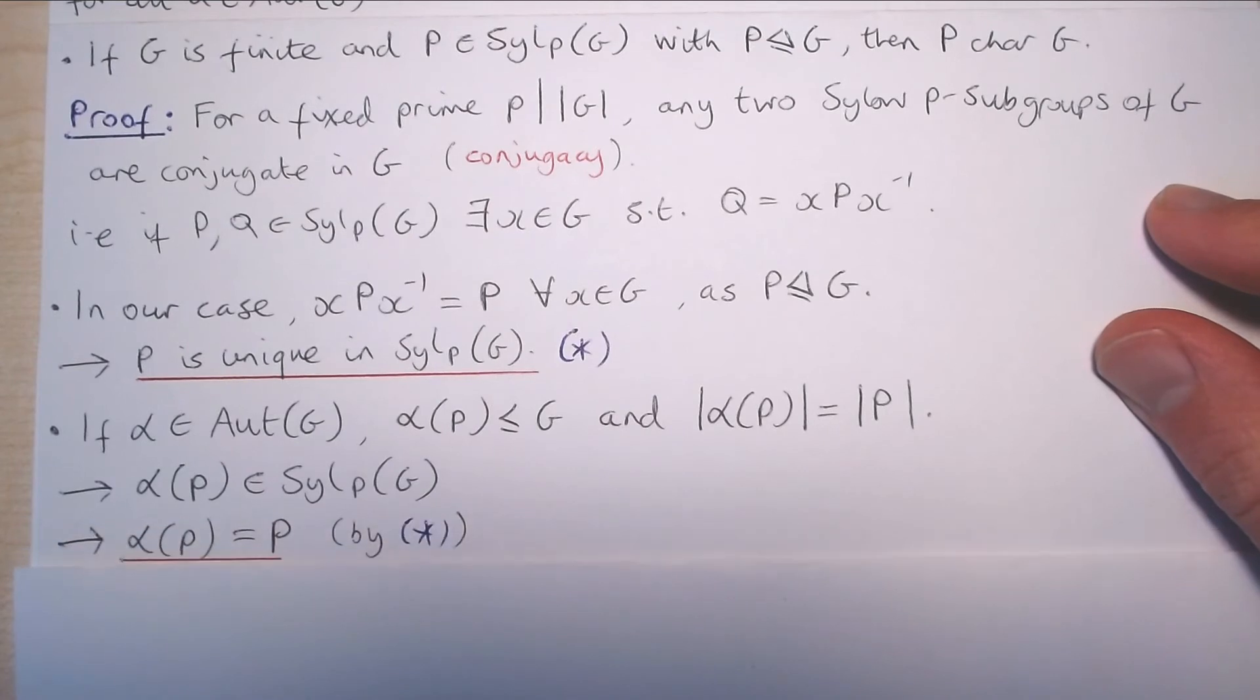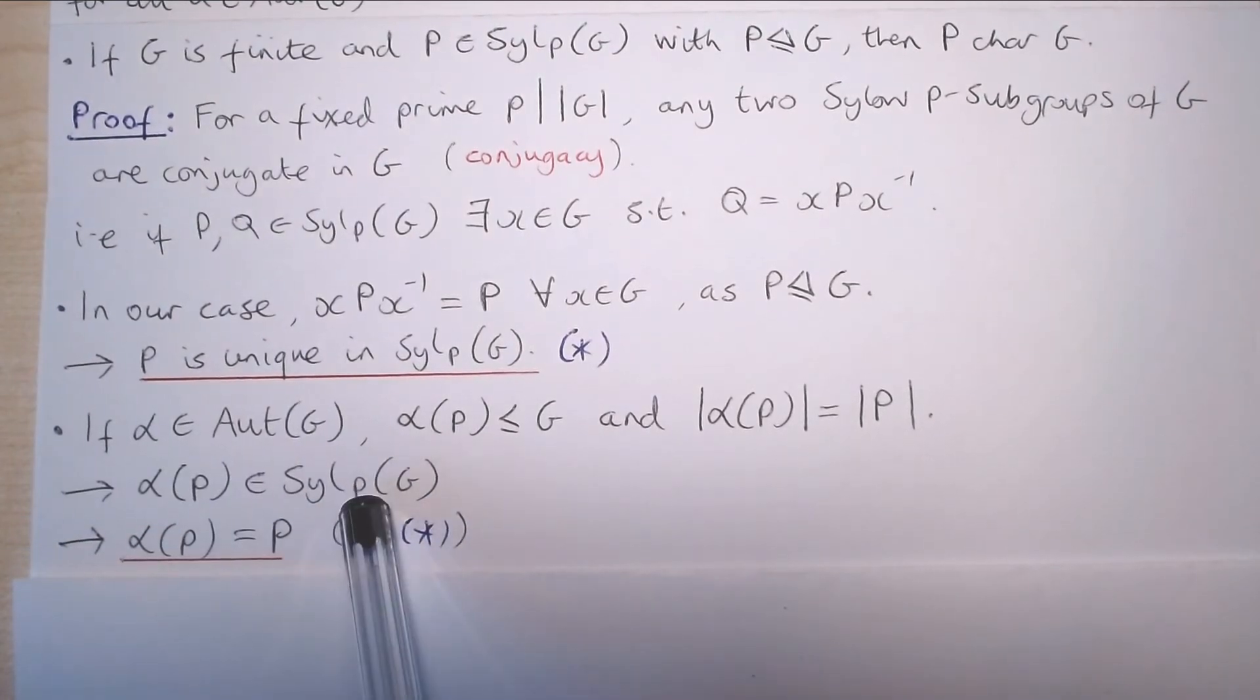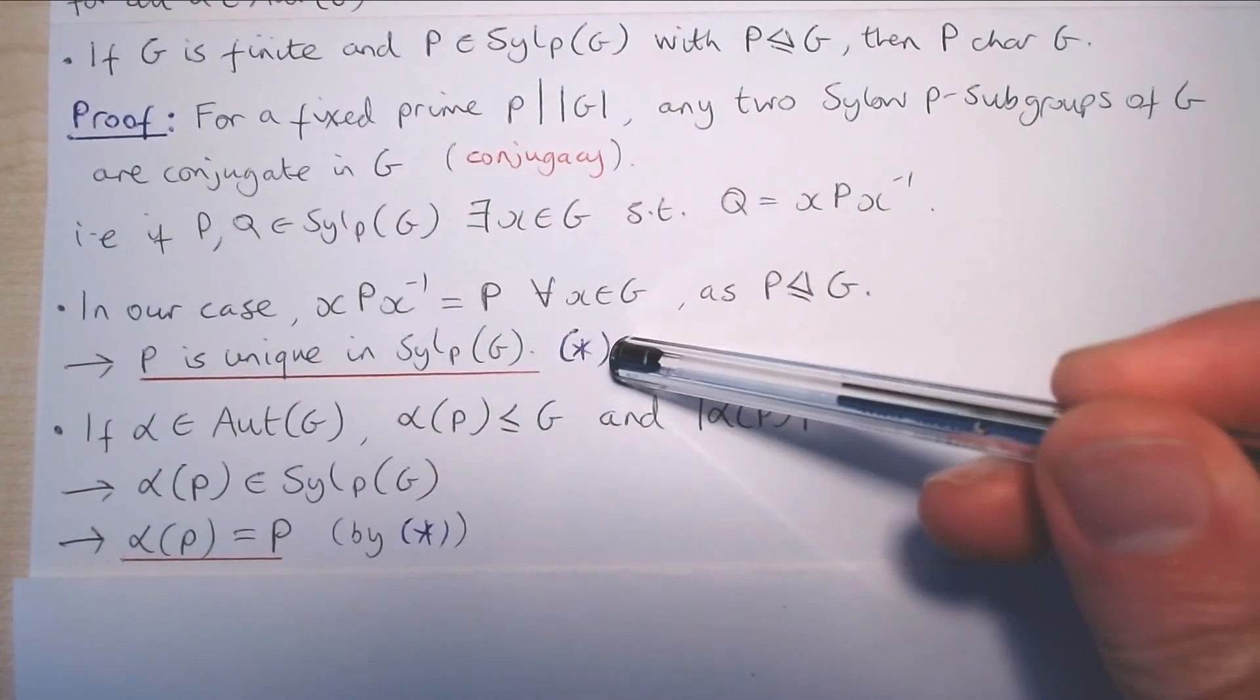But we've just shown that G has a unique Sylow P-subgroup for the prime P. Therefore, alpha of P has to equal P.